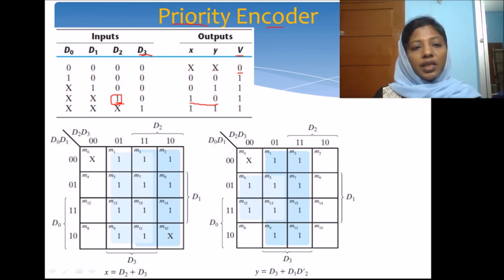That is why we have x here. And when d0 is 1, the output should be 0 0 for x and y and this is a valid output, so we have valid bit to be 1. When d1 is 1, we should have d2 and d3 to be 0. But d0 can be anything, d0 can be either 0 or 1. In that case, we are going to generate 0 1 as the output and so on. Let us implement this circuit.